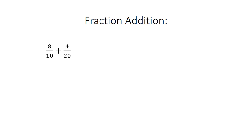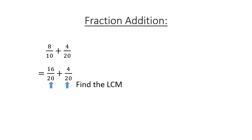Fraction addition: 8 over 10 plus 4 over 20. Find the lowest common multiple: 16 over 20 plus 4 over 20 equals 20 over 20, which equals 1.